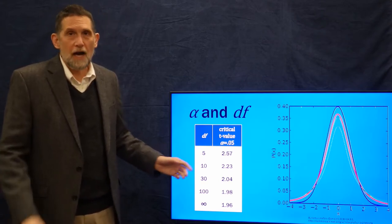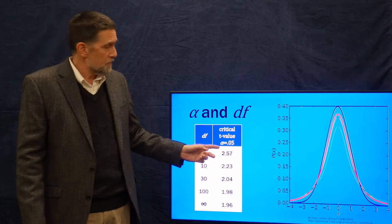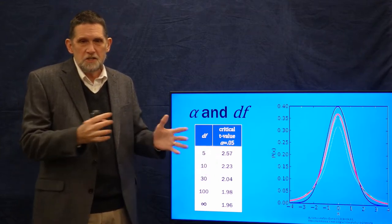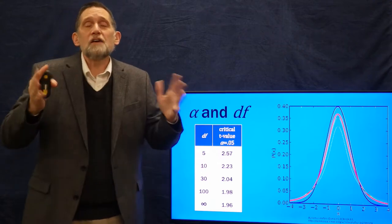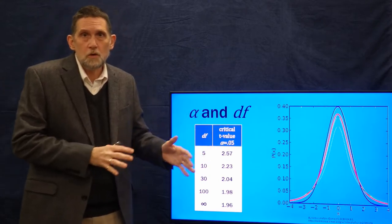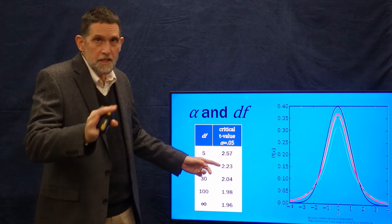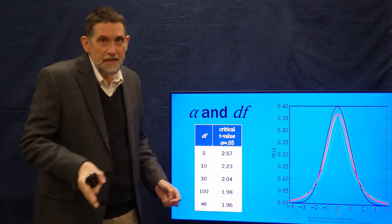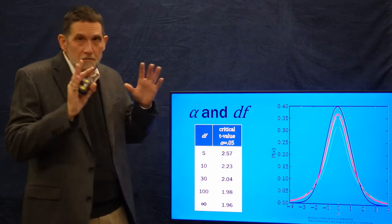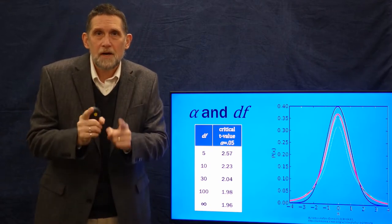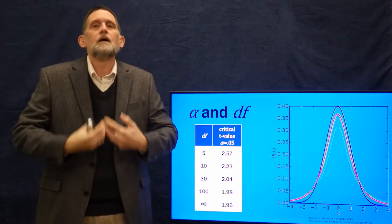In determining how much is in the tail and where a 0.05 critical value of alpha is, we need to take into account the degrees of freedom — the size of the sample. If we have a degrees of freedom of five, the critical value of t at 0.05 is 2.57. Think of that as conceptually equivalent to a z-score. When we have a value less than alpha — a probability less than alpha — that's when we reject the null hypothesis.